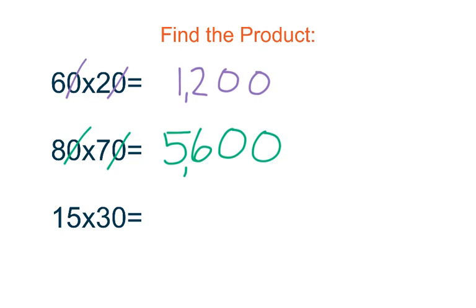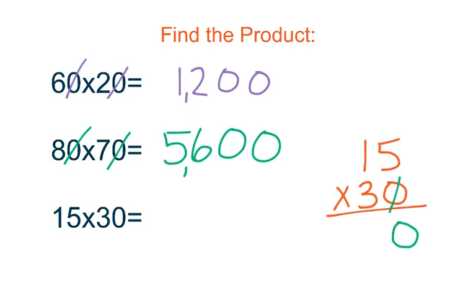Our last problem is 15 times 30. Some of you may have been able to solve this in your head. If you had to work it out, you could have worked it out a number of different ways. If you were using regrouping, we talked about the importance of putting the number with the zero on the bottom. This gives you less work because all you have to do is cross that zero out, place it down, and then do your multiplication: 3 times 5 gives you 15, you'd carry, then 3 times 1 gives you 3, plus one more is 4, and you get a product of 450.